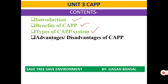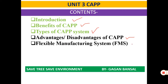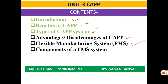Today we will be studying advantages and disadvantages of computer-aided process planning. Also, in this particular unit we will be covering a few more topics like flexible manufacturing system and components of flexible manufacturing system, including various subcategories of FMS.